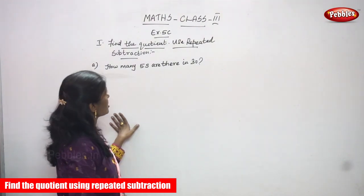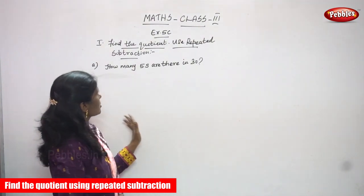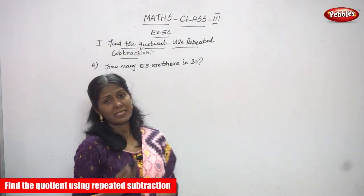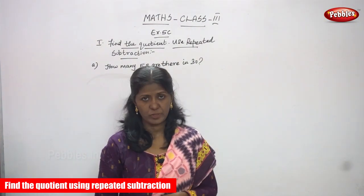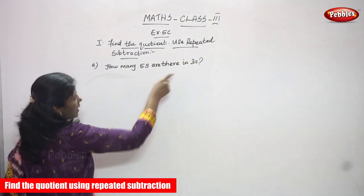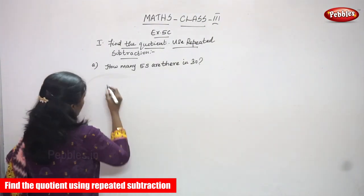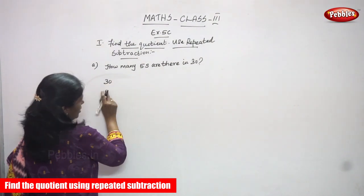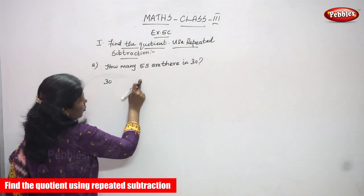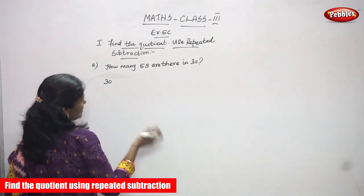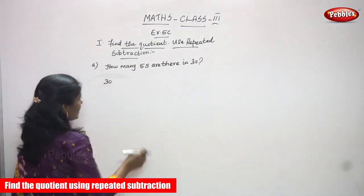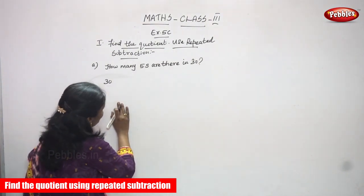Now we are going to find the quotient using repeated subtraction. Repeated subtraction is otherwise called division. We are going to see how many 5s are there in 30. So 30 is the dividend and we are going to subtract 5 repeatedly.